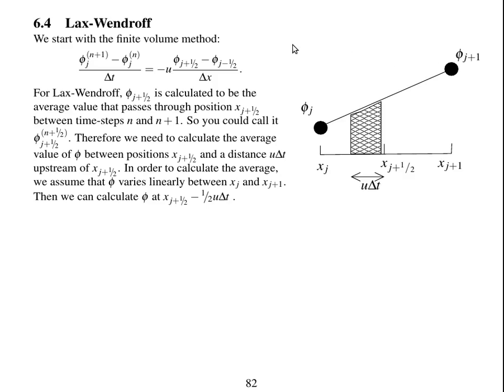So if we start off with the generic Finite Volume method in one dimension, we've got at position j, so this is now phi over the whole grid box j, rate of change of phi with time is equal to u, we're assuming that u is constant in space, multiplied by the change in phi over the grid box divided by delta x.